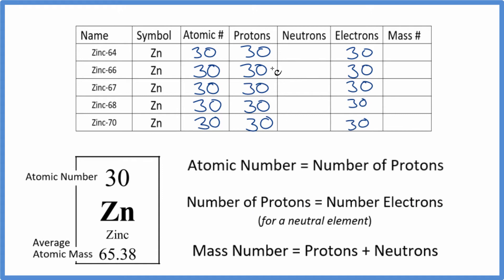Often when you're given a table like this, you'll be given the number of neutrons or the mass number, and that makes it easy to figure out the other one. But if you're given a specific isotope like zinc-64, that 64 in the name, that's the mass number. So we have 64, 66, and so on.